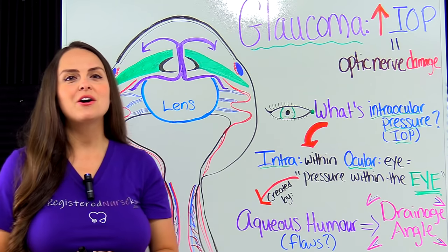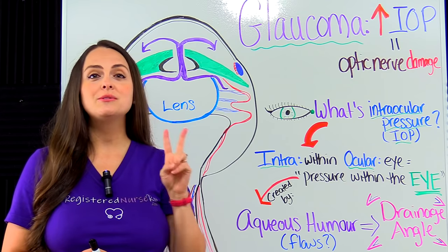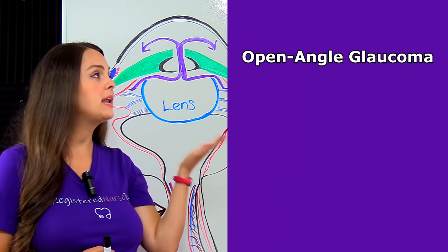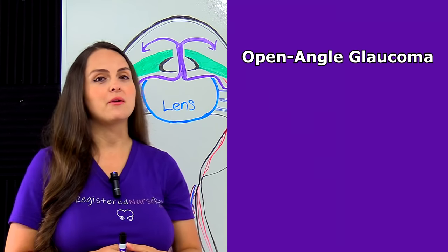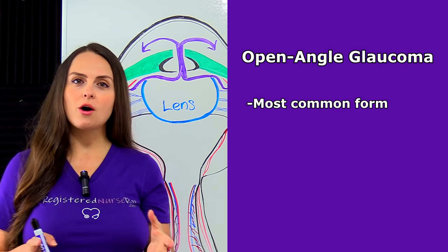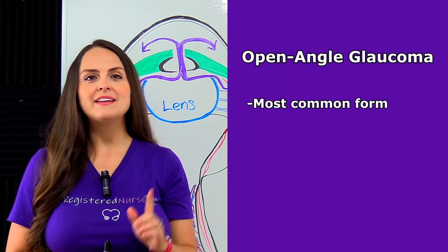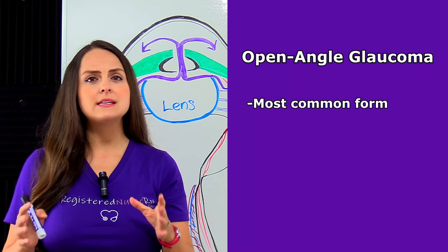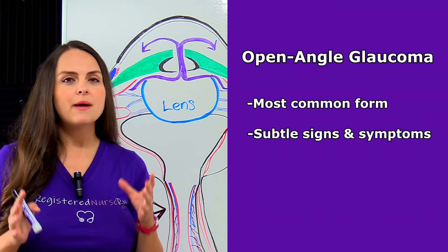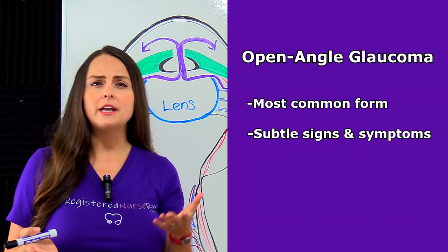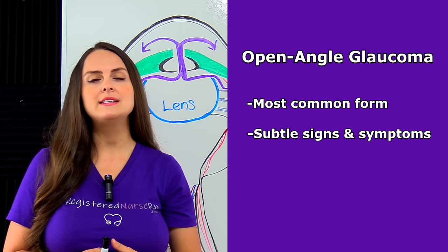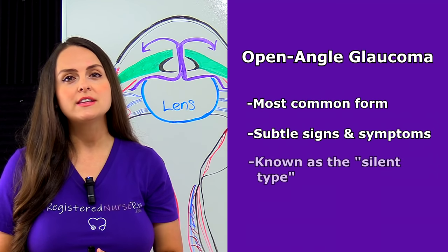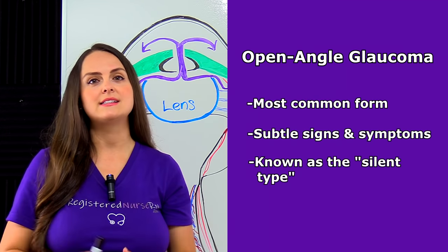In this lecture, we're going to talk about two types of glaucoma. The first type is called open angle glaucoma, and this is the most common form. The thing you want to remember about this type is that its signs and symptoms are very subtle. The patient won't really know they have it until the disease has really advanced, so we refer to this type as the silent type.